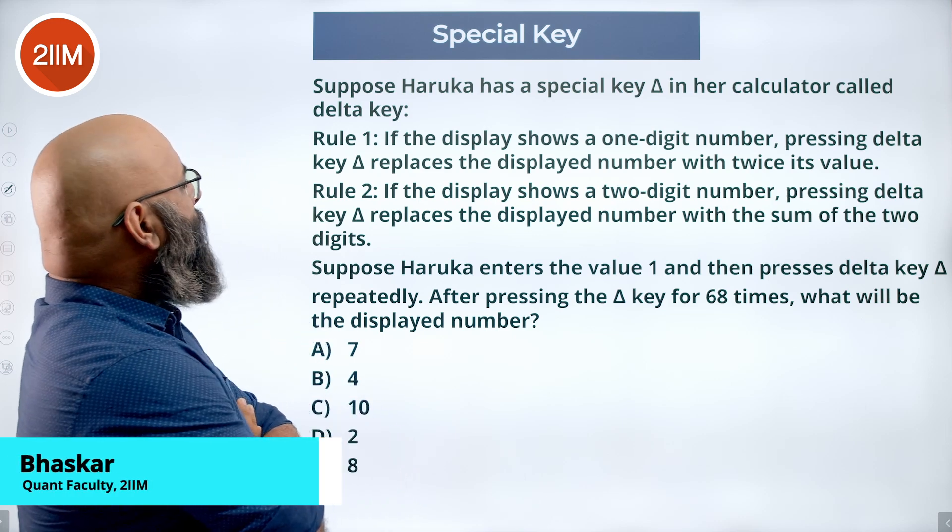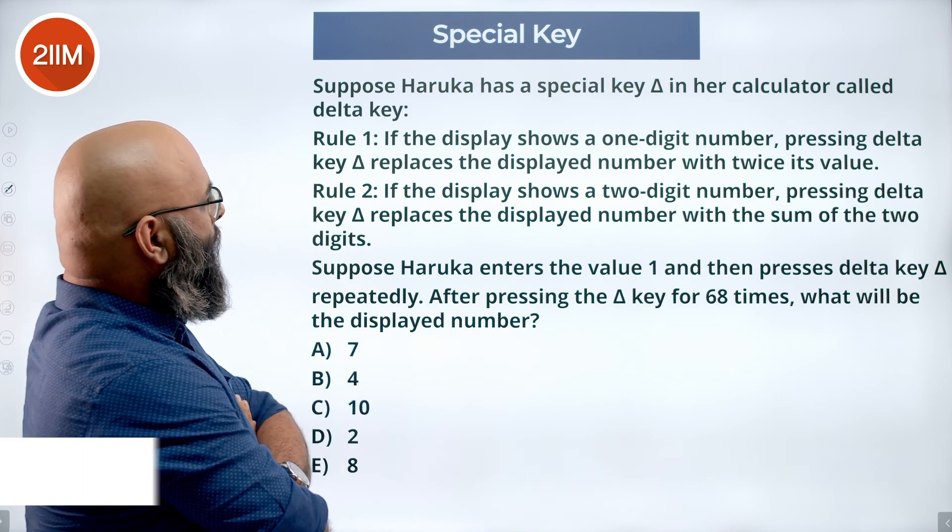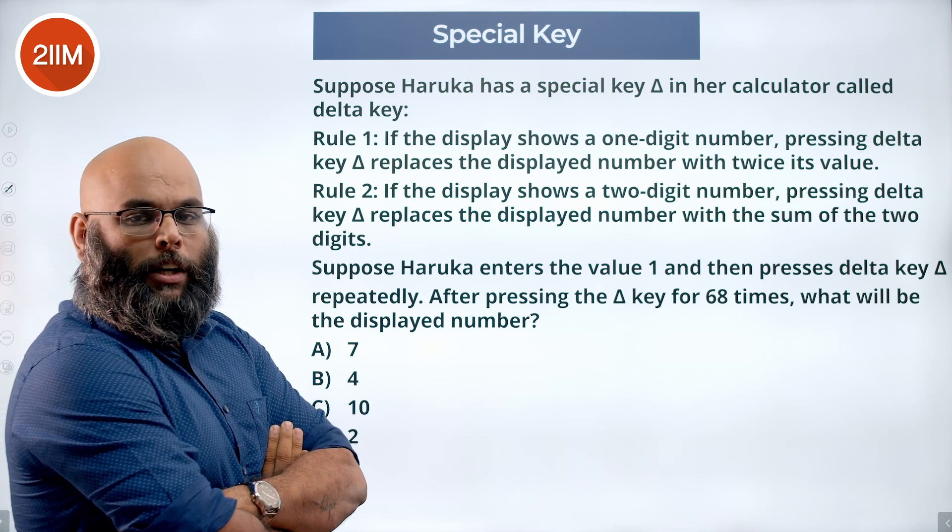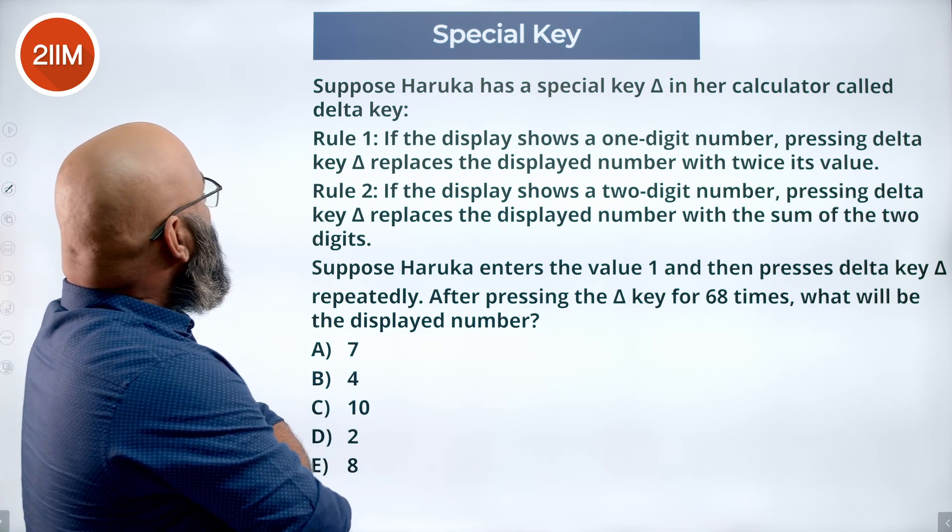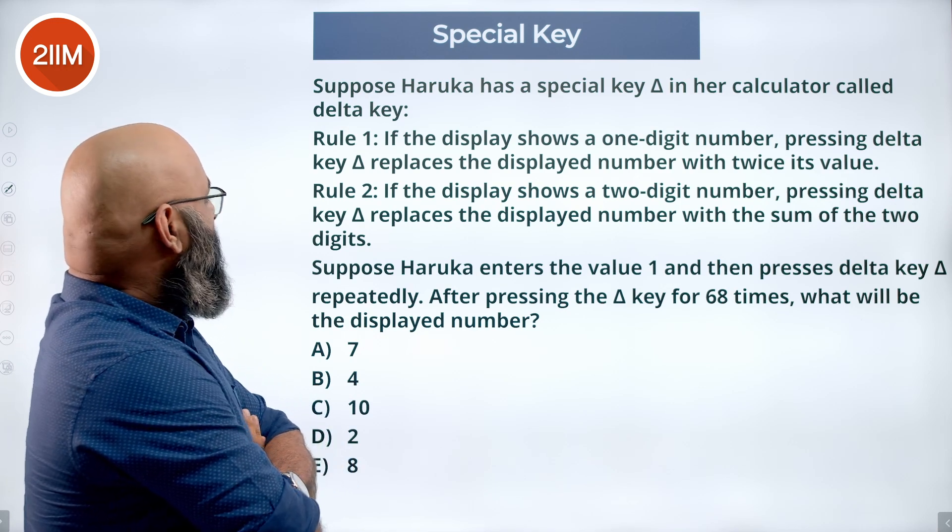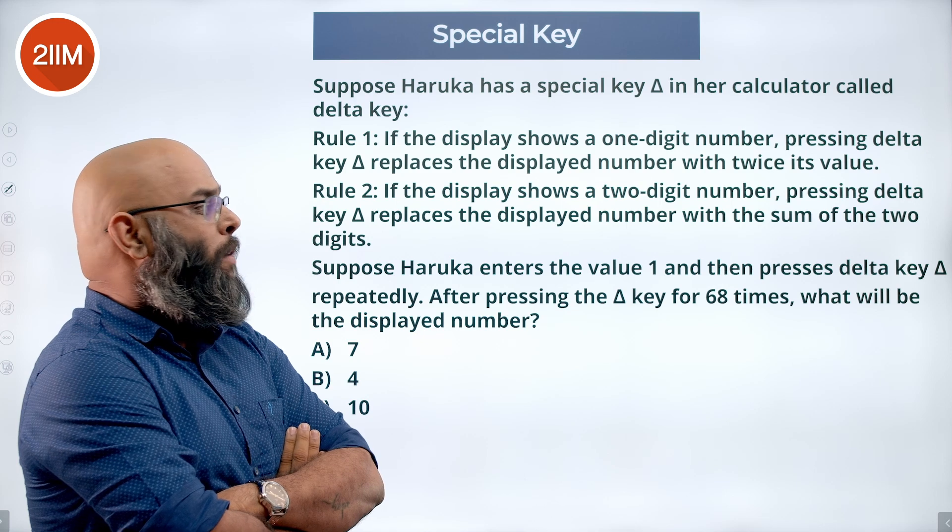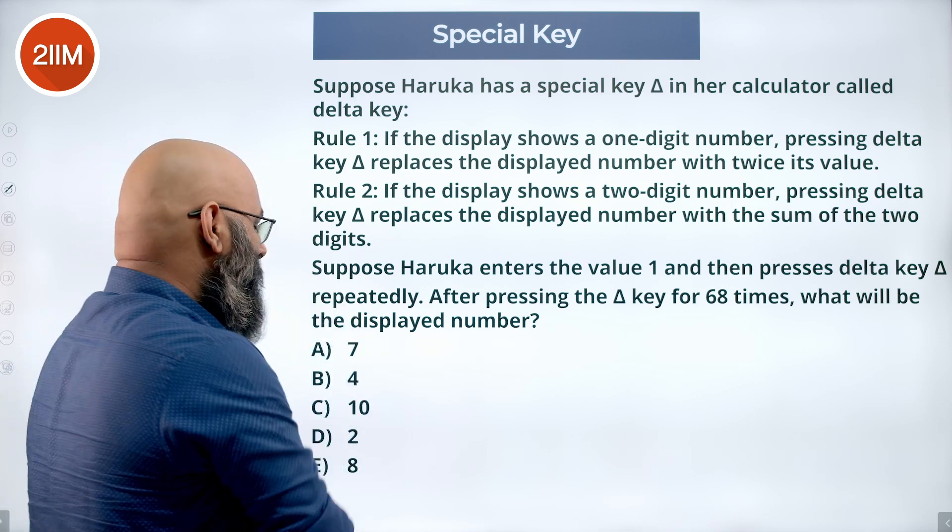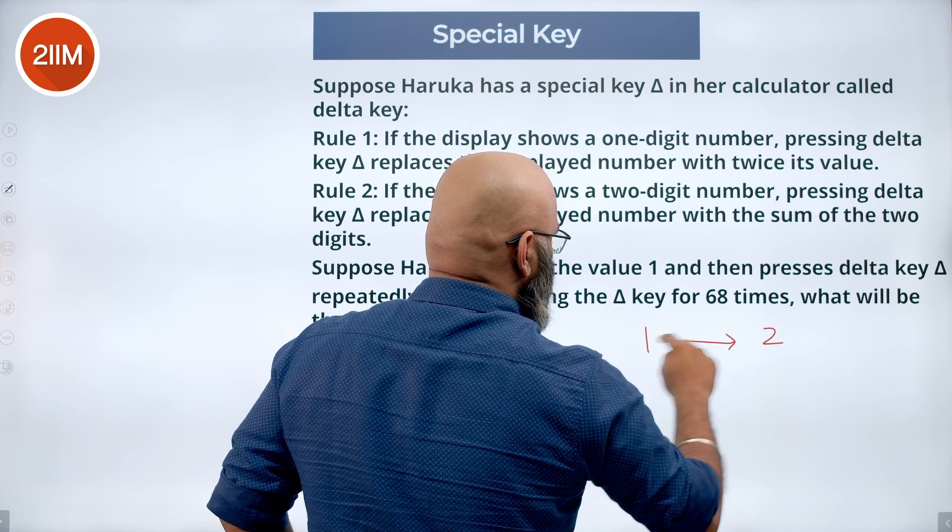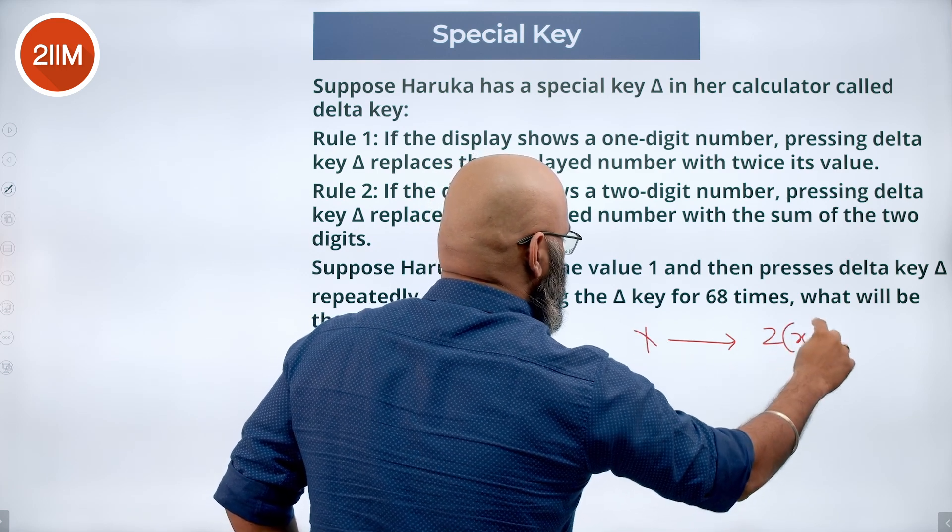Thanks Shmaa. Suppose Haruka has a special key delta in her calculator. The key delta does a particular function. If the display shows a one-digit number, pressing delta key replaces the displayed number with twice its value. So you enter a one-digit number, you get two times that number. Let's call it x, you get 2x.